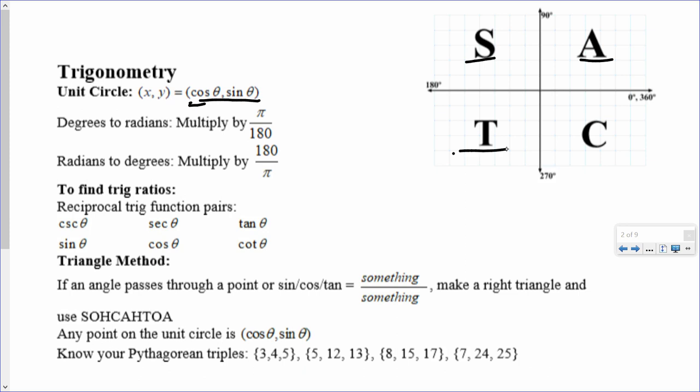In quadrant 3, tangent is positive, which makes sine and cosine negative. In quadrant 4, cosine is positive, that makes sine and tangent negative.